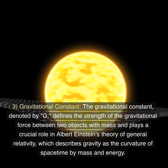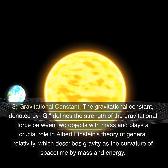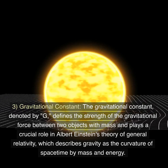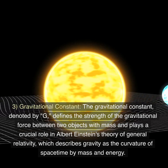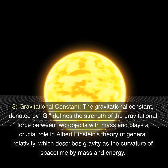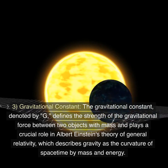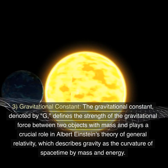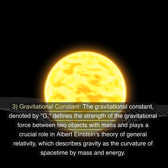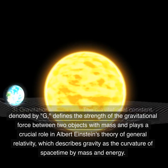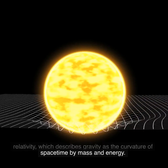3. Gravitational constant. The gravitational constant, denoted by G, defines the strength of the gravitational force between two objects with mass and plays a crucial role in Albert Einstein's theory of general relativity, which describes gravity as the curvature of space-time by mass and energy.